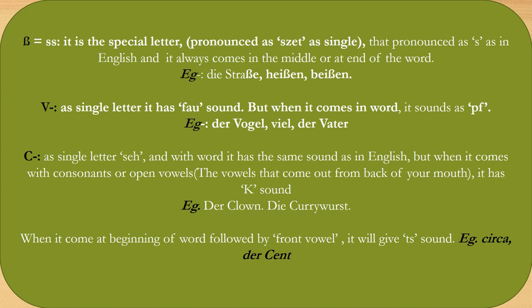Now let's talk about V. As a single letter in German, it is pronounced as 'Fau'. But when it comes in a word, it sounds like F. For example: Vogel, Fehler.